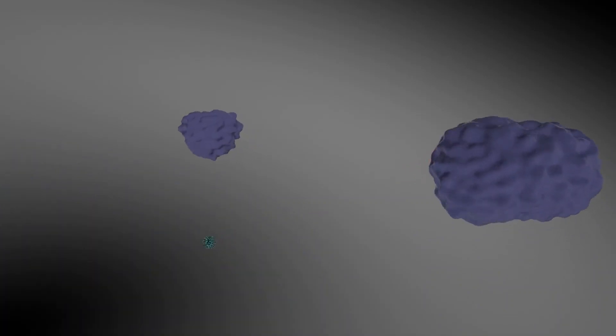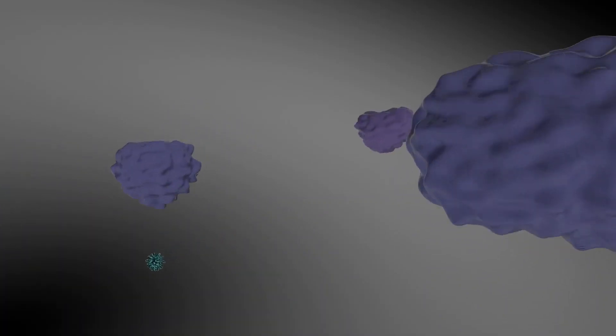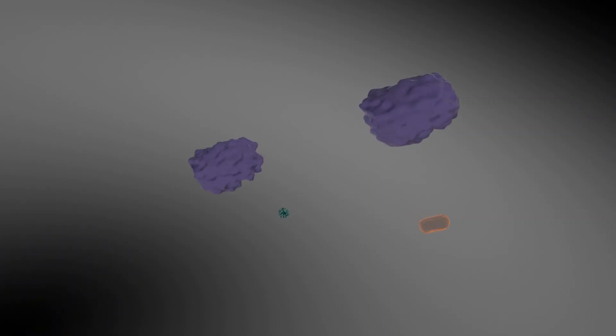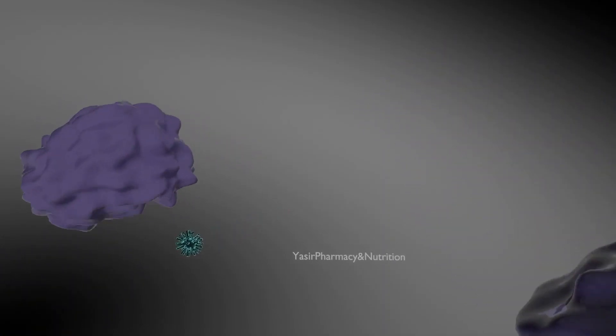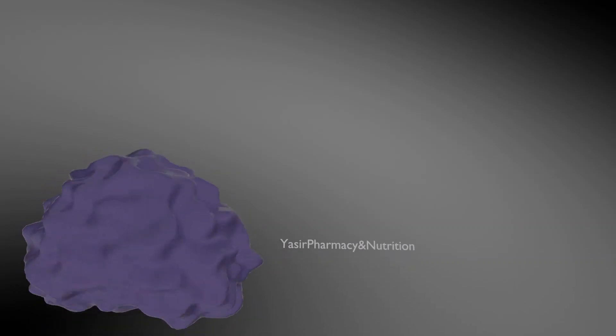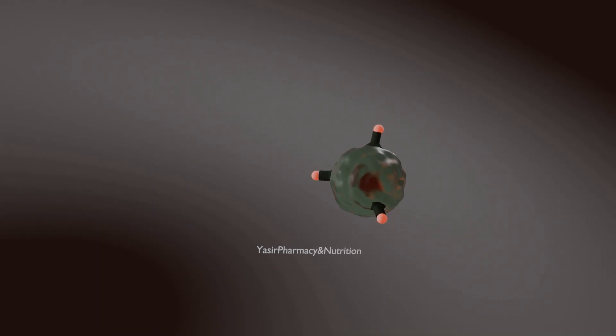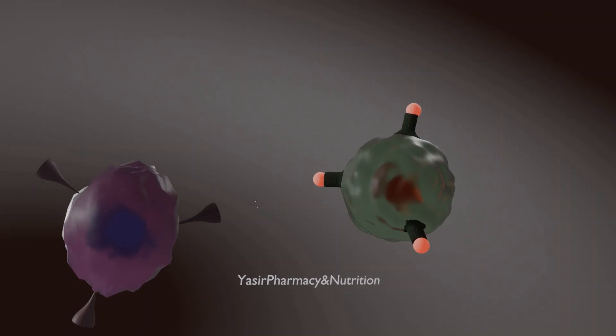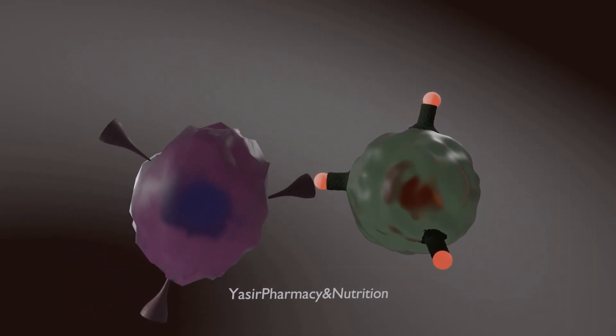Macrophages and antigen-presenting dendritic cells are attracted to the site of microbial invasion. There, these cells perform the process of ingestion. After processing, dendritic cells present antigen on their surfaces to the T cells.